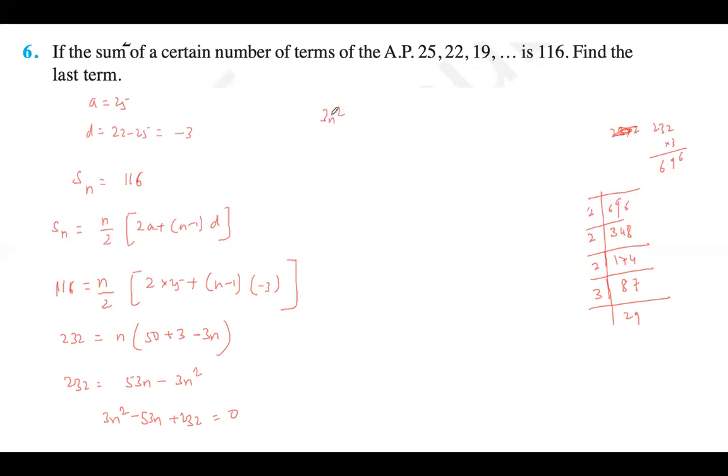3n squared minus 24n plus 29 plus 232 is equal to 0. So if 3n is common, then n minus 8 and minus 29 plus n minus 8 is equal to 0.